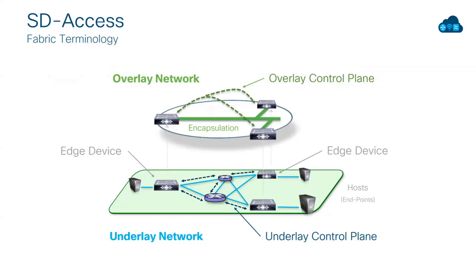It's very important to separate the underlay from the overlay networks to understand SD Access. There's still physical cable and a control plane doing the work in the underlay, allowing connectivity between all underlay elements. The underlay edge devices will add the extra header required for the overlay fabric to work, so we can say that edge devices live in both networks — they understand and participate in the underlay, and they also see the overlay. The overlay has its own separate management protocol and control plane, totally isolated from the underlay. It uses extra encapsulation headers to do that work.